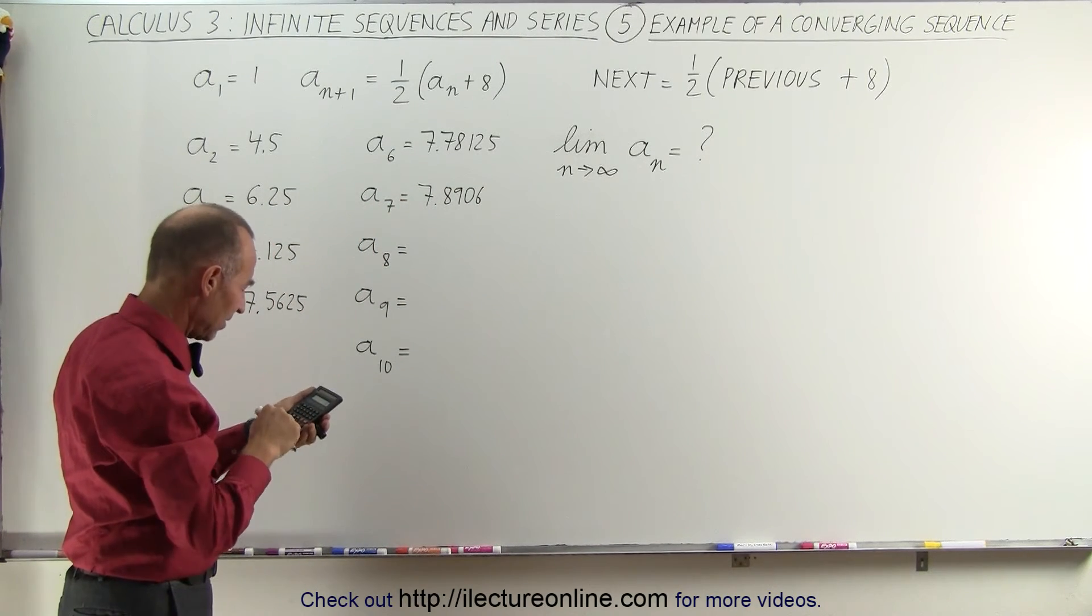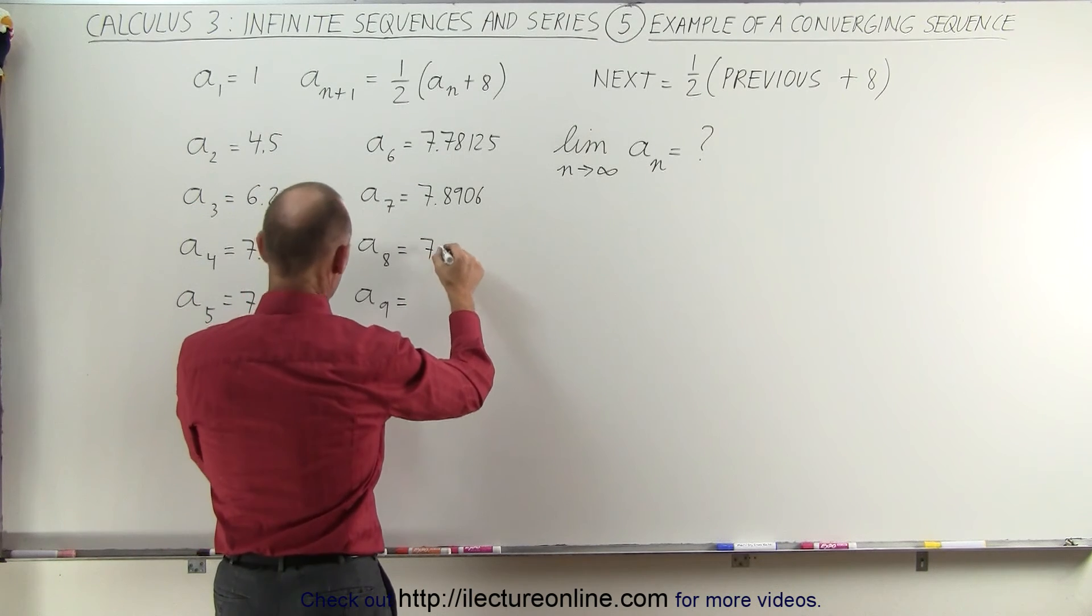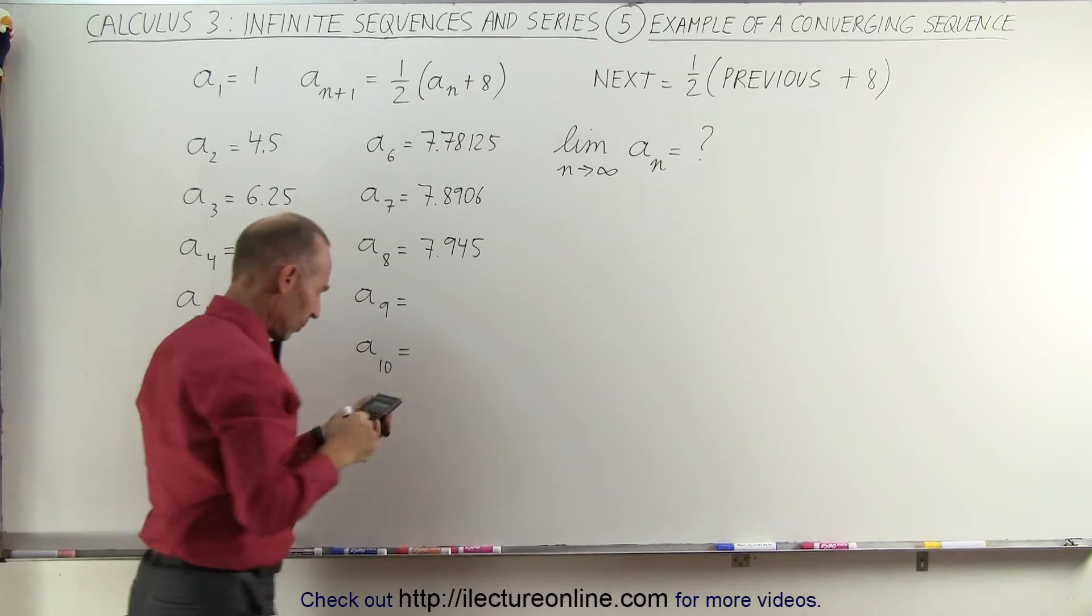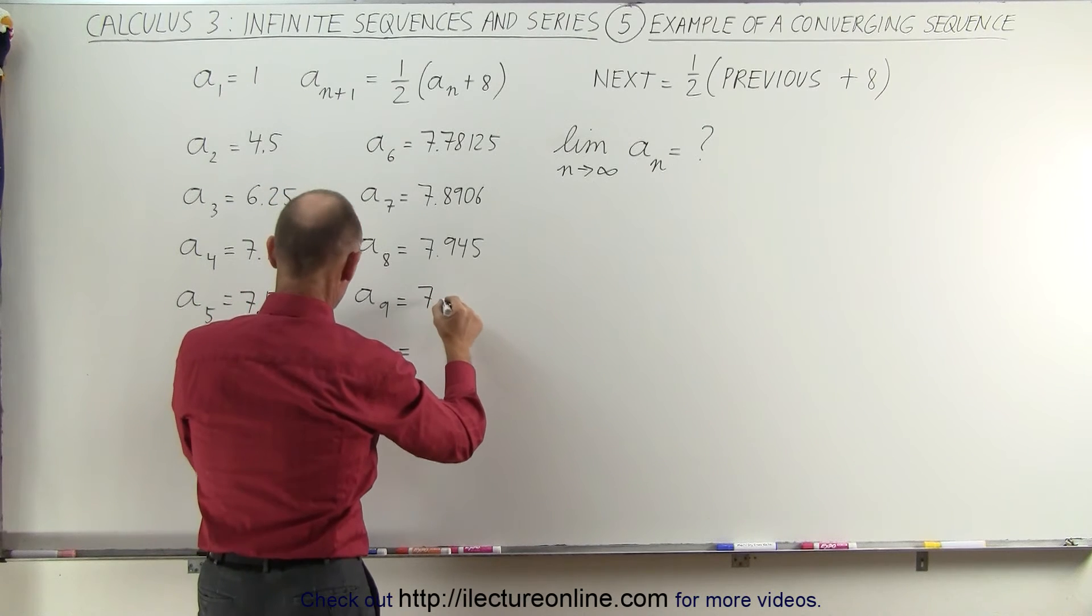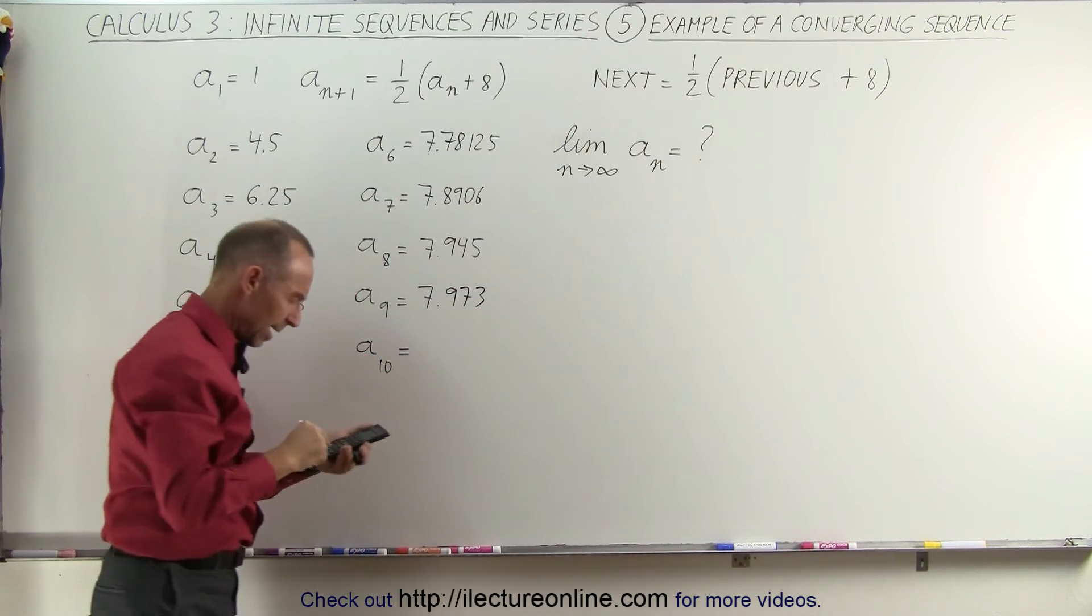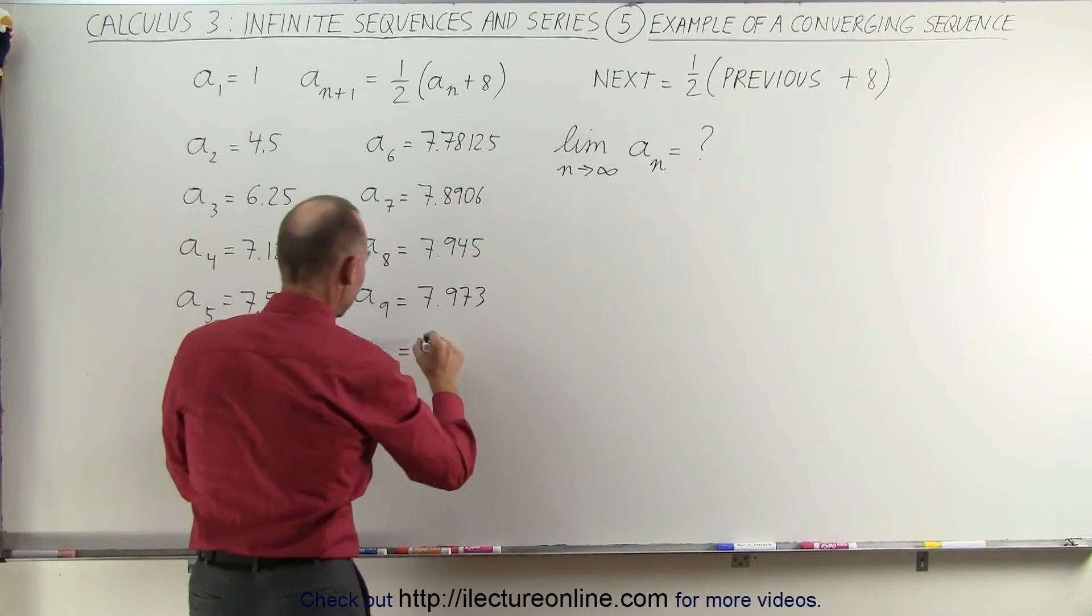So we add eight to that divided by two and I get 7.945. I'm going to add eight to that, divide by two, and I get 7.973, and I add eight to that, divide by two, and I get 7.986.